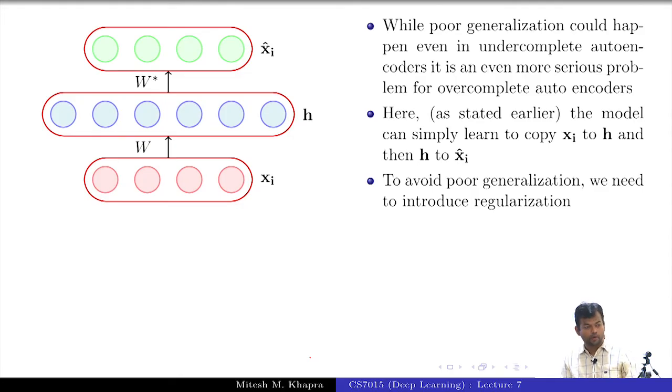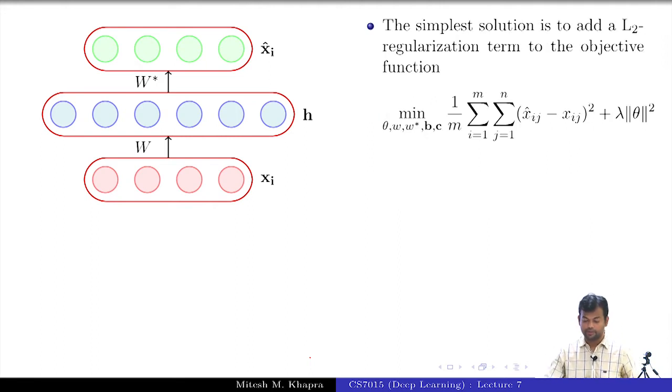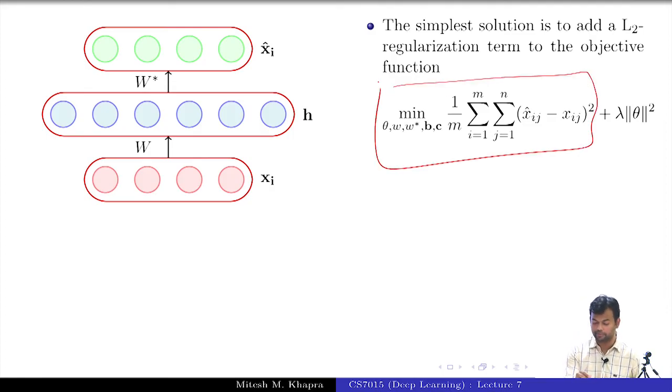And you see why I say that is the simplest we can take the derivative. So the simplest solution is to add the L2 regularization term to the objective function. So this was my objective function I wanted to minimize the squared error loss. I have added a term to this. What does this term do? What is it doing? First of all tell me what is this quantity? Theta is all the parameters that you have, right, and I am assuming that you have just put it into a large vector. I am taking the L2 norm of that vector, right.